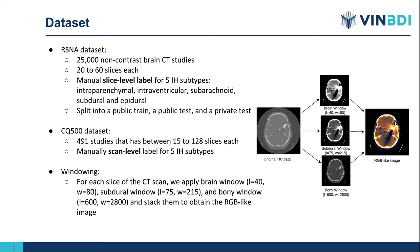For each slice, we apply 3 standard CT windows: the brain window, the subdural window, and the bone window, and stack them to obtain an RGB-like image.